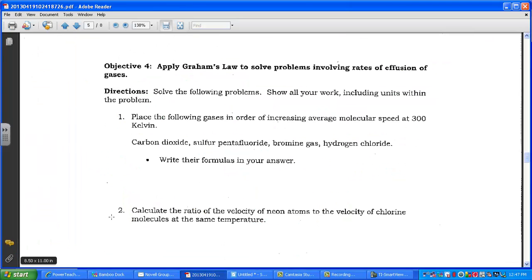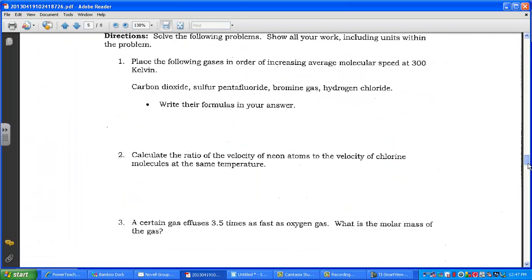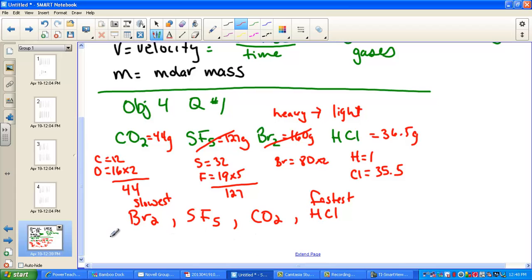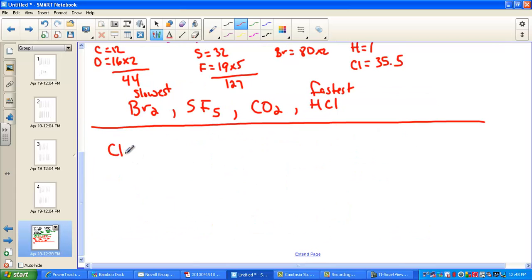Let's read number two. We want to calculate the ratio velocity of Neon to that of Chlorine. Again, we're at the same temperature, so we're comparing Chlorine and Neon. Chlorine is a molecular compound, Cl2, and Neon, of course, is a noble gas, so its formula is simply Ne.